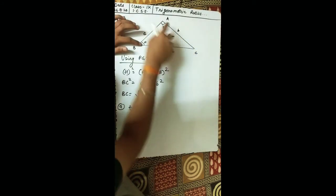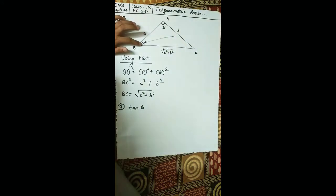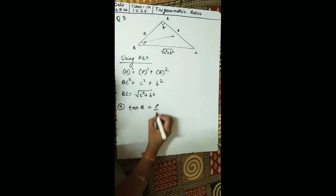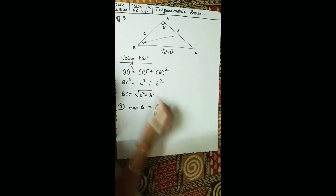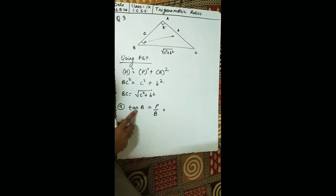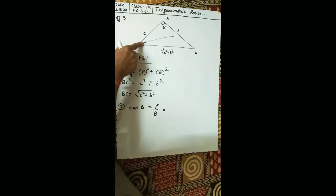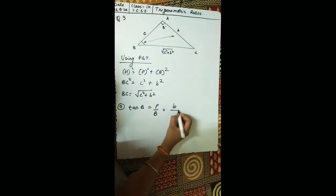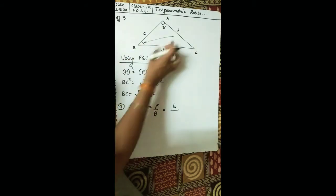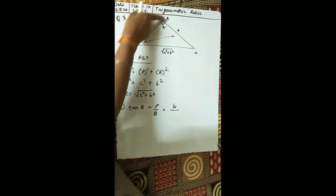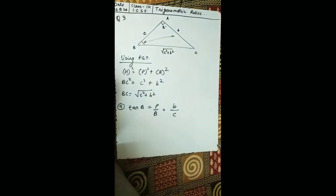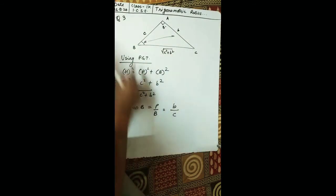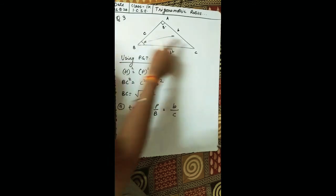Since tan theta equals perpendicular upon base, for tan B, the theta is on B and the opposite side is the perpendicular, which gives us b upon c. Always remember: the hypotenuse is fixed regardless of where theta is — only the perpendicular and base change depending on which angle is theta.